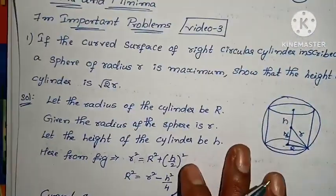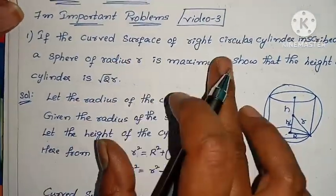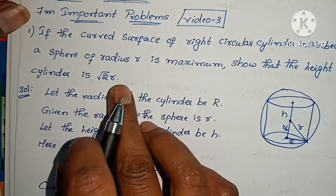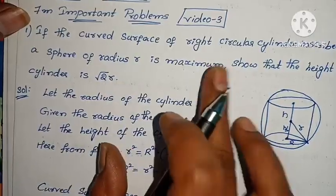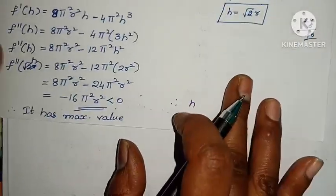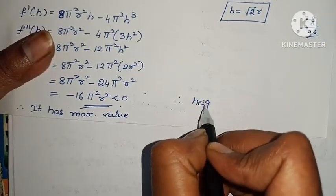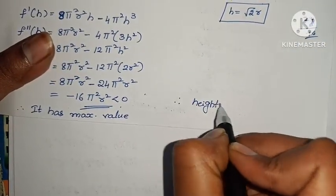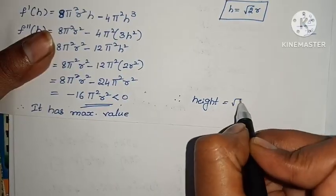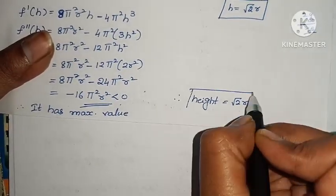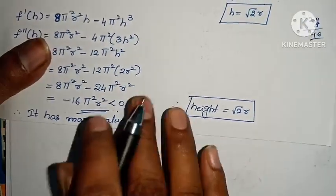Since f''(H) is less than 0, the curved surface area has a maximum value. Therefore, as the question requires us to show, the height equals √2R. The problem is complete.